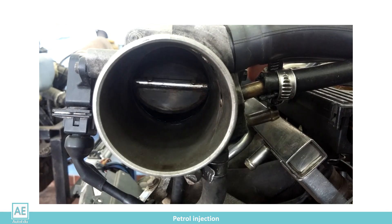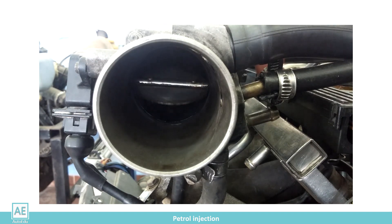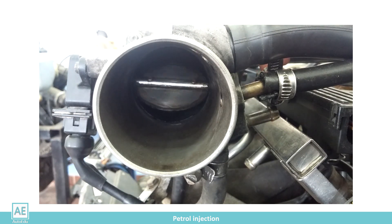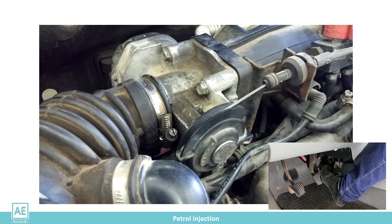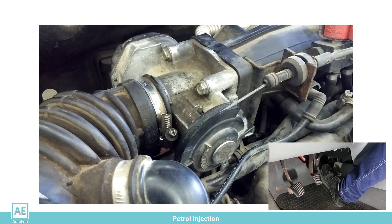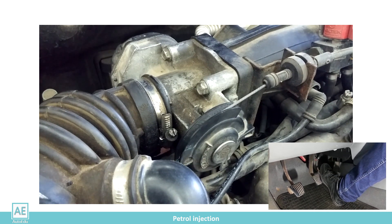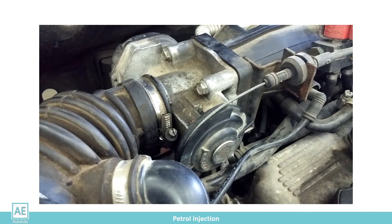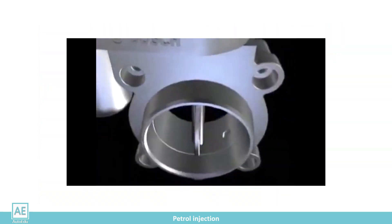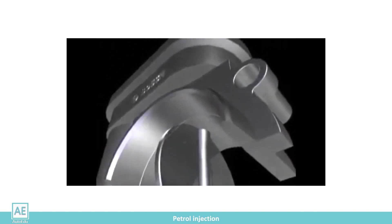The throttle valve is an element that controls the speed of gasoline engines. The driver affects the position of the throttle through the accelerator pedal and the Bowden cable. By changing the throttle valve position, the amount of air intake, the amount of mixture, and the engine speed change. Thus, the driver directly controls the engine operation and the vehicle speed via the accelerator pedal, Bowden cable, and throttle valve.